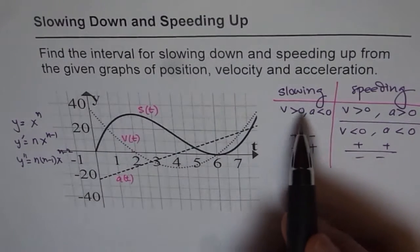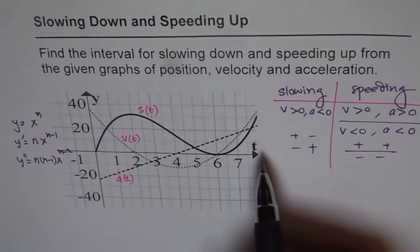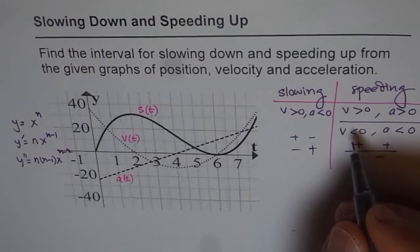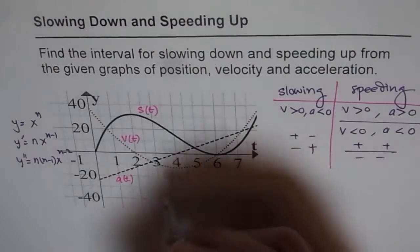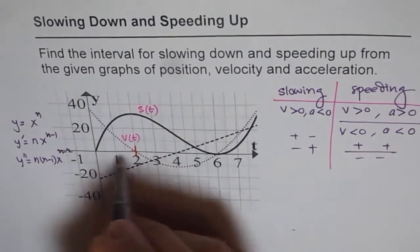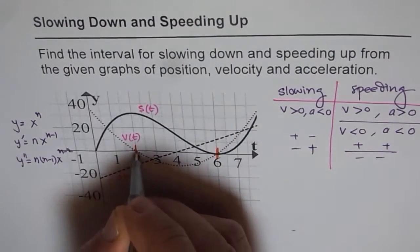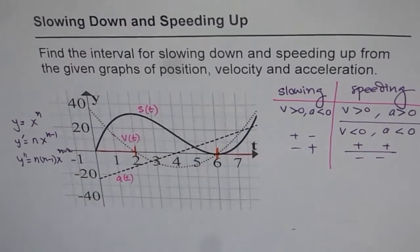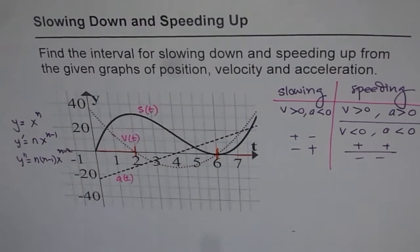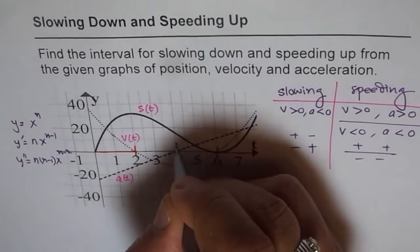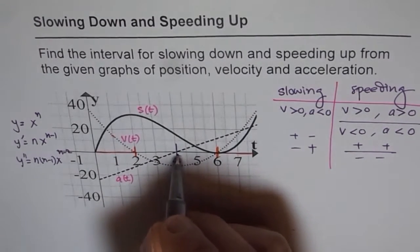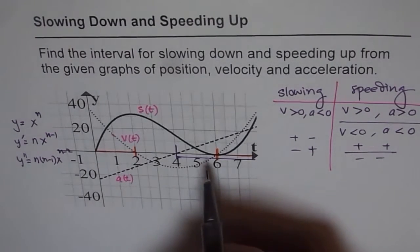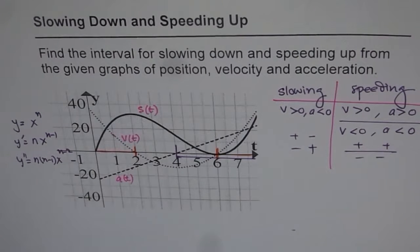For slowing down and speeding up, we only need to check the graphs for velocity and acceleration — the dotted ones. Let's see where they are positive and where they are negative. Velocity is positive before and after a certain point. Acceleration is positive after a specific point and negative before it.